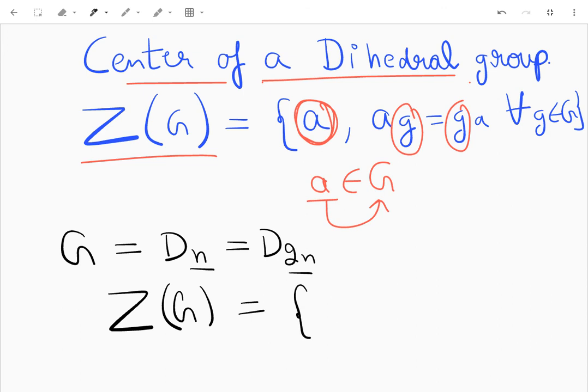Now let's see, the center of this dihedral group can contain either rotations or flips. These are the two kinds of elements that exist in a dihedral group, so these are the two kinds of elements that can exist in its center.